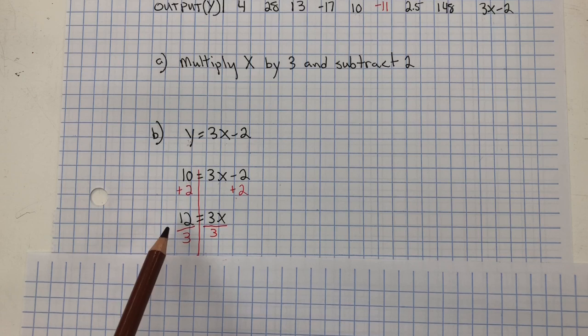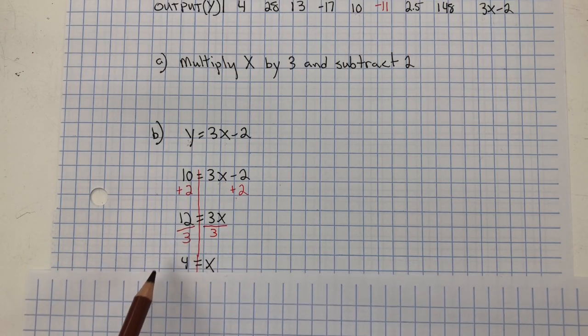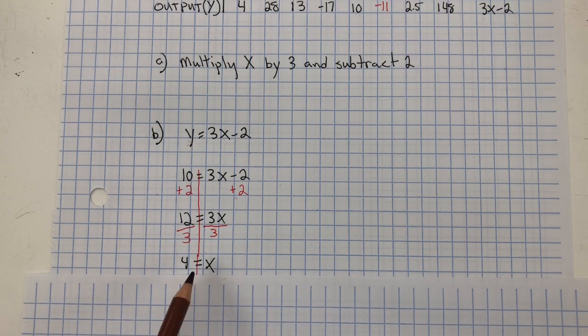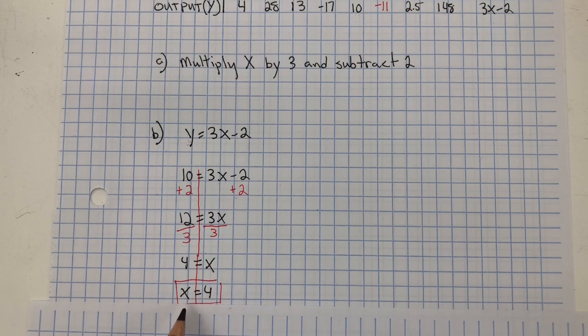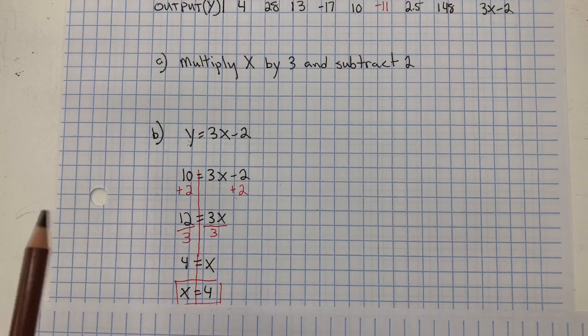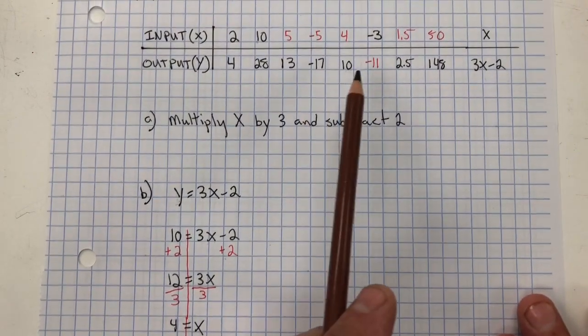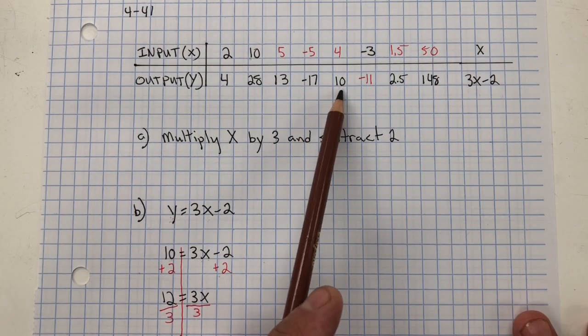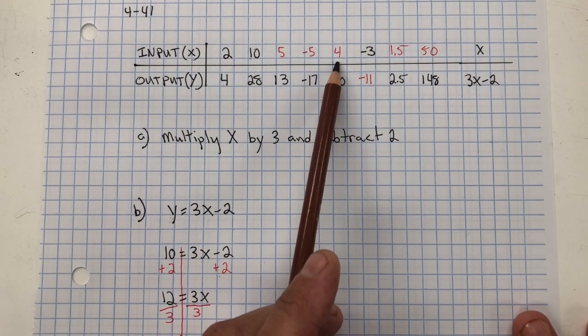What you do to one side, you do to the other. 12 divided by 3 is 4. So, 4 equals X, and your answer is X equals 4. And that's what I have here. Input value is 4, output value is 10.